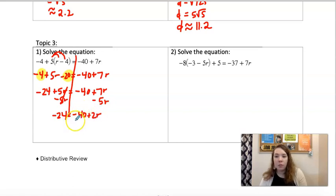Which will give us 2r. And now it's a two-step. So we would add 40 to both sides. Divide by 2. 8 equals r would be your final answer.